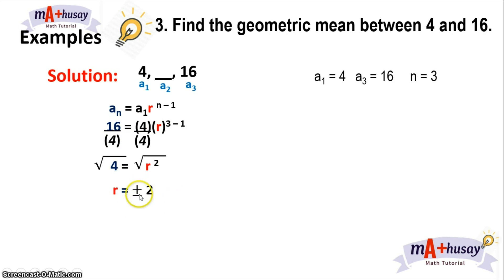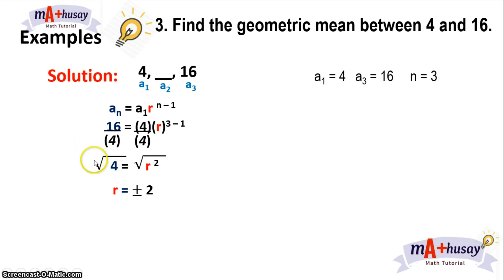Dividing both sides by 4, we get 16 divided by 4 is 4, which equals r squared. Getting the square root of both sides, r is equal to positive or negative 2. Take note: we're talking about square roots, and the index of this radical is 2, which is even — so if it's even, we have two solutions, either positive or negative.